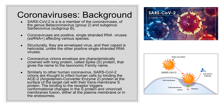A little background about SARS-CoV-2: it is a member of the beta-coronavirus. It is a positive single-stranded RNA virus. It is enveloped and has a capsid that is helicoidal. The envelope has a spike protein that is important because it binds to the ACE2 receptor. The binding of the receptor triggers conformational changes in the S-protein, and viral cell membrane fusion occurs either at the plasma membrane level or in the endosomes.